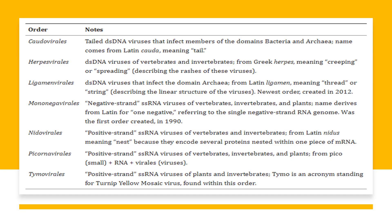These are the seven orders of viruses categorized by ICTV. Caudovirales include tailed double-stranded DNA viruses that infect members of the domain Bacteria and Archaea; their name comes from the Latin 'chordo' meaning tail. Herpesvirales include double-stranded DNA viruses of vertebrates and invertebrates; they are named after the Greek word 'herpes' meaning to creep or to spread, describing the rashes of these viruses.